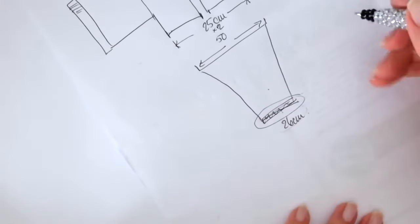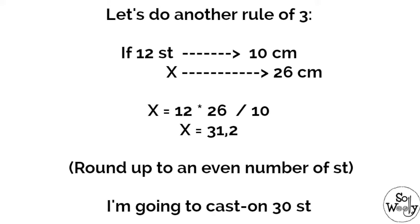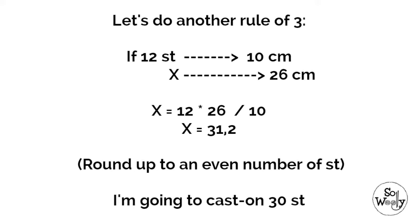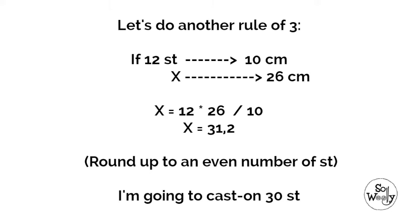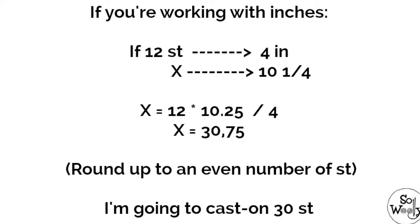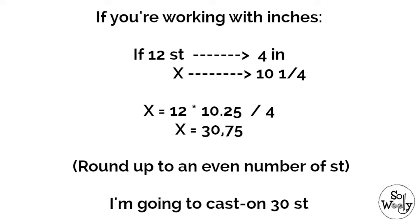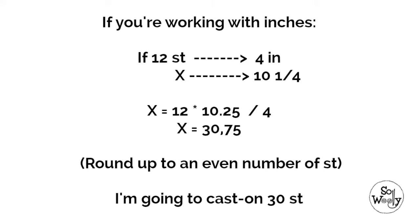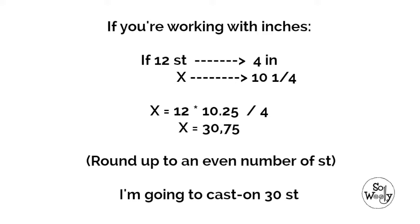Here I know that the sleeve widens to 50 cm to ensure that it fits onto the body of the sweater properly. So to get this shape we have to increase stitches. But first we need to know how many stitches to cast on. So let's do another rule of 3: if 12 stitches is 10 cm, how many stitches are 26 cm? So 12 times 26 divided by 10 is 31.2. But I need an even number of stitches, so round up to 30 — I'm going to cast on 30 stitches. If you are working in inches: if 12 stitches is 4 inches, how many stitches are 10 and a quarter? Multiply 12 by 10.25 and divide it by 4 — the result is 30.75, so cast on 30 stitches.